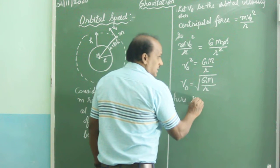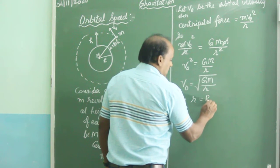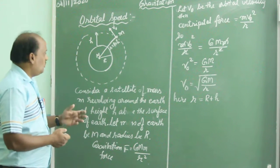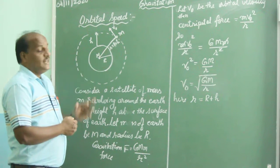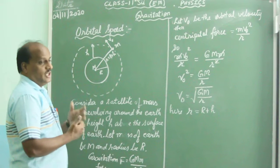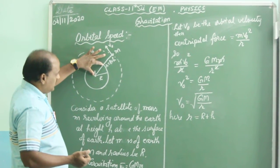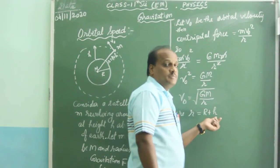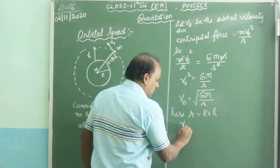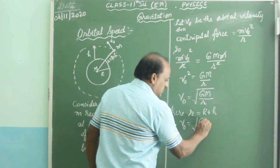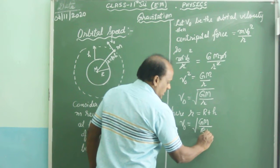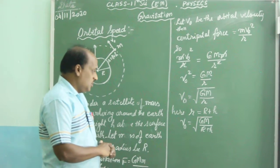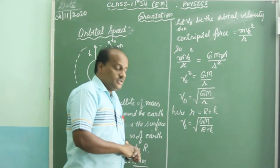Here, small r equals capital R plus h, where small r is the distance of the satellite from the center of Earth — it equals the sum of the Earth's radius R and the height h. Substituting this value, we get V0 equals the square root of GM divided by (R + h). This is the formula for the orbital speed of a satellite from Earth.